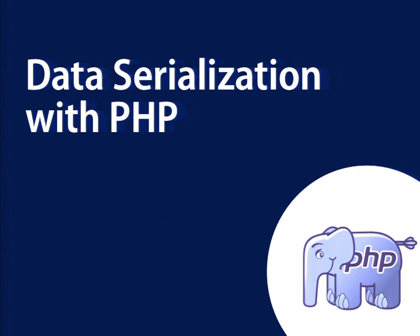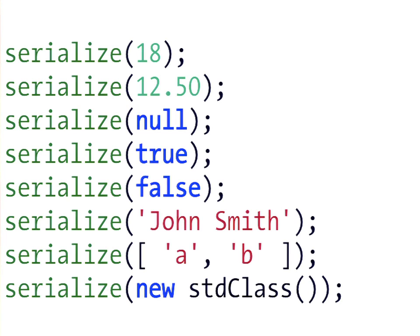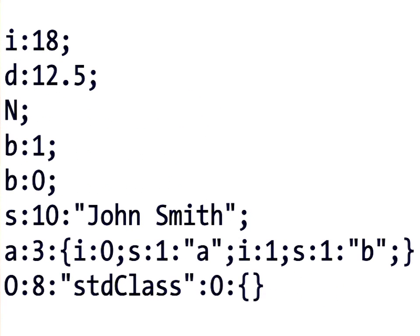How do we do serialization with PHP? We have different tools. The very first function everyone has used is the PHP serialize function, which serializes any data in a proprietary format that only PHP can read. It can serialize scalar values, arrays, and even objects, producing this kind of output.